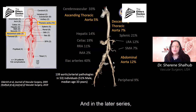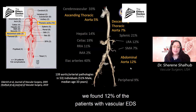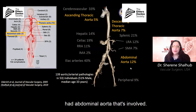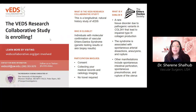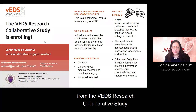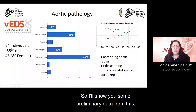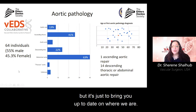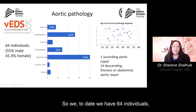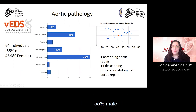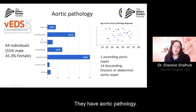In the later series, we found 12% of patients with vascular EDS had abdominal aorta involvement. We are also learning a great deal from the VEDS Research Collaborative study, where we have been enrolling patients over time. To date, we have 64 individuals — 55% male and 45% female — who have aortic pathology.